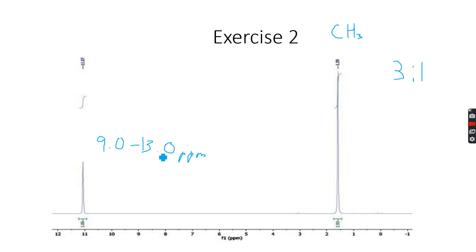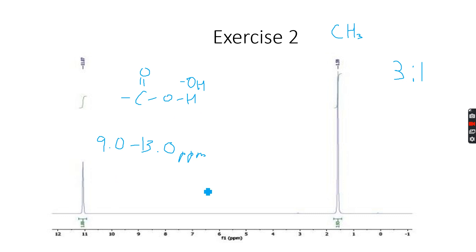A carboxylic acid group has one proton because it is C-O-H, and it contains the OH group we talked about earlier, which confirms it's a singlet. So in my opinion it has to be the carboxylic acid group, making this CO2H. This molecule is ethanoic acid, and if you look at the data booklet you'll understand how I got this and you'll be able to solve it.